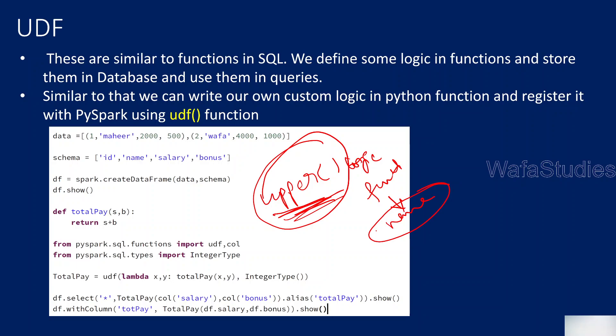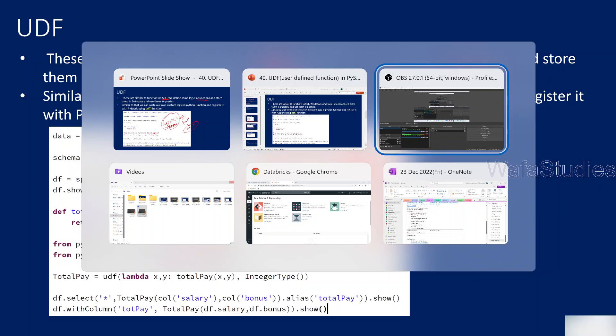Similarly, for some custom transformation according to your business need, if you want to use it as a function, you create a Python function with that logic and register it using UDF. If you know SQL, it is similar to functions in SQL — you can create functions, store them in the database as an object, and use them while querying data. Even if you don't know SQL functions, when I practically show you, you will make more sense of it. Let me practically explain this with a use case.